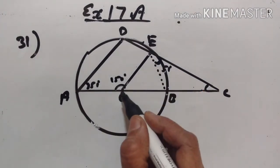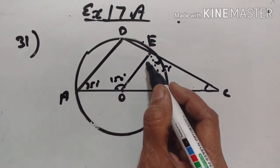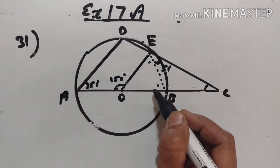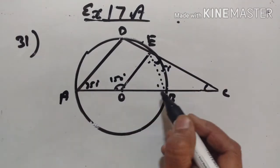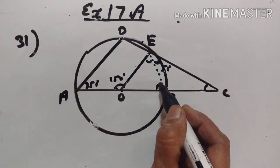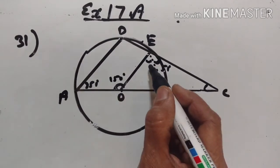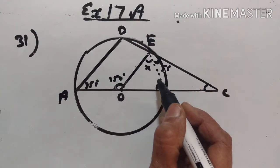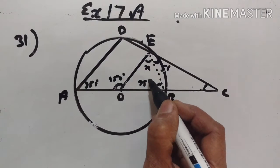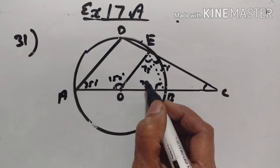Now, in triangle EOB, angle EOA is the exterior angle. The exterior angle equals the sum of the interior opposite angles. But these two angles are equal because OE equals OB, both being radii of the circle. Therefore, angles opposite equal sides are equal. If these two angles are both X, then 2X equals 150, so X equals 75 degrees each.